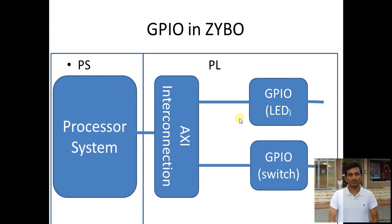In this lecture I'm going to use two GPIOs — one for LEDs and one for switches. Inputs from the switches go through the AXI lite interface and AXI interconnection to the processor. The processor then sends those inputs through the AXI interconnection to the GPIO for LEDs, and the results will be shown on the LEDs present on the board.